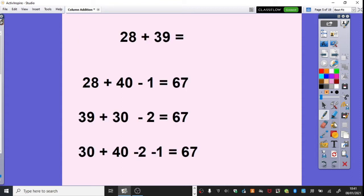So there are actually a number of ways. We're going to start by rounding our 39 in the first calculation here. So we've done 28 add 40 obviously would give us 68. Just to jot that down there, minus 1 equals 67.